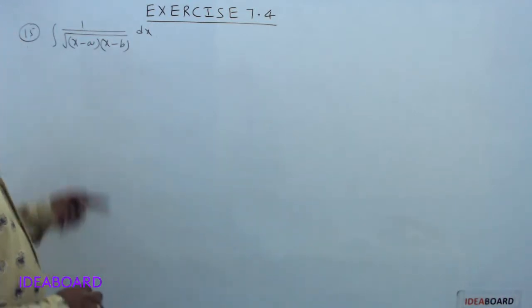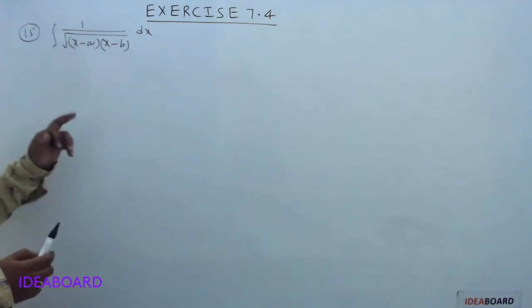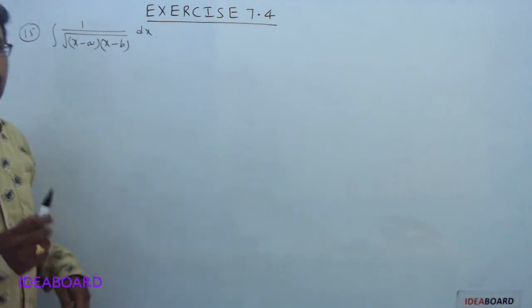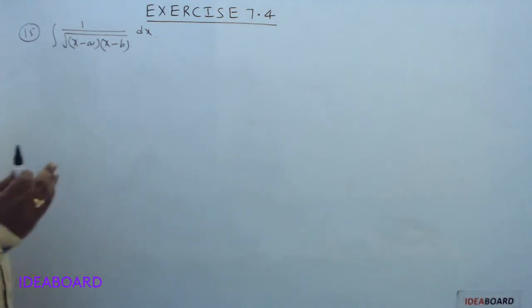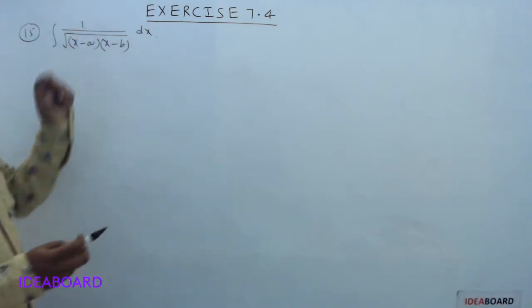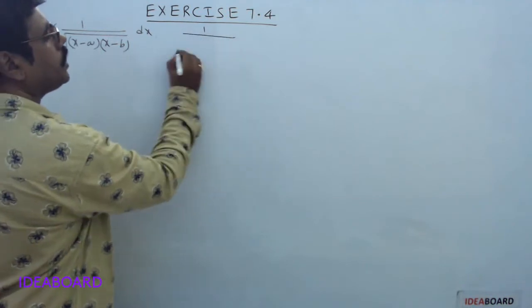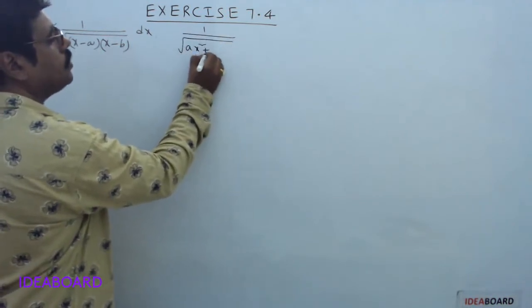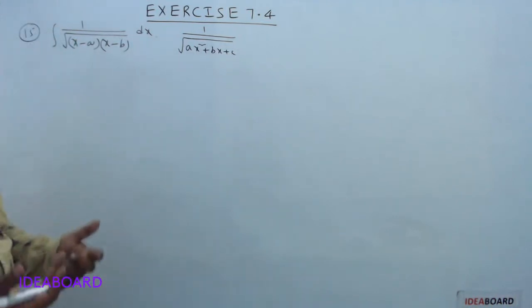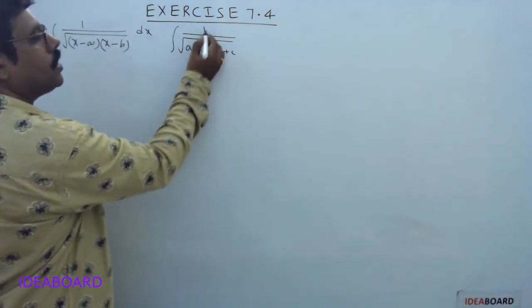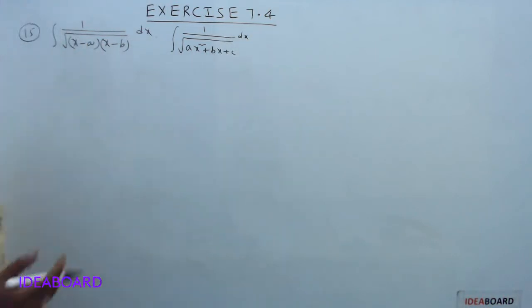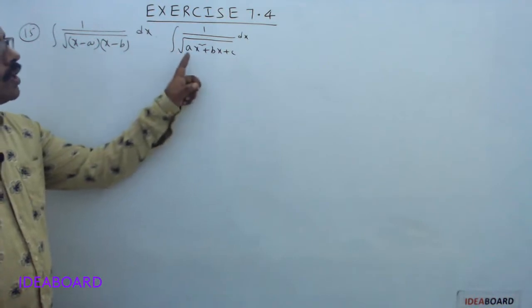Now see the next problem: integral of 1 divided by square root of (x minus a)(x minus b) dx. If you multiply these two factors, you get a second degree expression. This means this integrand is of the form 1 divided by square root of ax² plus bx plus c. So the given problem is of the form integral 1/√(ax²+bx+c) dx. Apply the procedure to evaluate this type of integral.